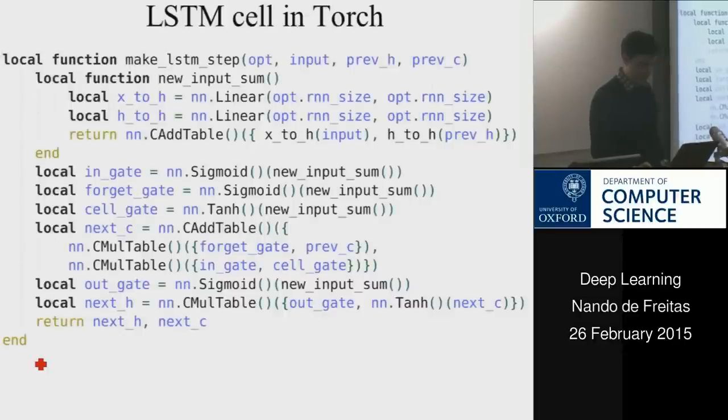In Torch, a single LSTM cell will essentially, again, you basically specify the input, which is a sigmoid, and then you need to pass to it WX, sorry, theta X plus theta H, the previous H, and for that you implement a function. So instead of introducing the parameters here individually, we just call a function that creates linear layers from X to H, and from the previous H to the new H, and then we create a module that adds those two,